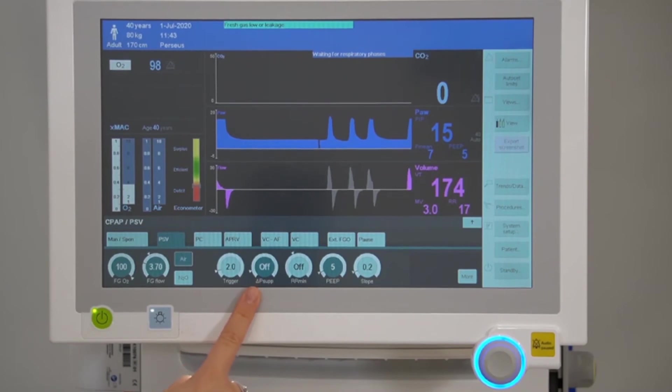Turning delta pressure support off allows for purely spontaneous breathing at CPAP level.